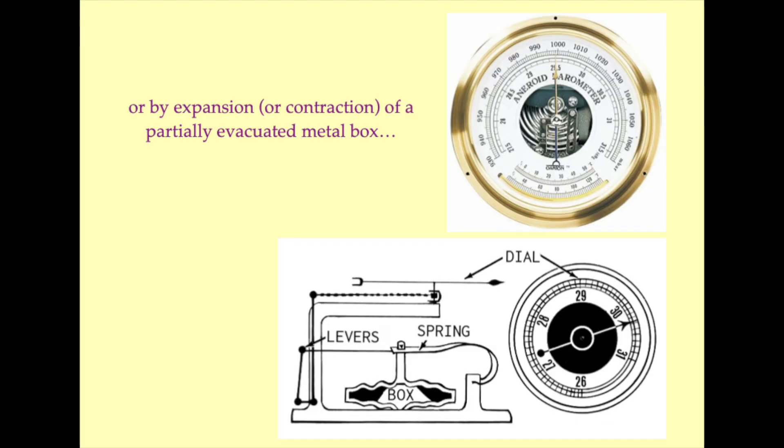Aneroid barometers are built around an evacuated metal canister. This canister will expand if the pressure applied to it is reduced and will contract if the pressure applied to its exterior is increased. These expansions and contractions are directly related to the position of a dial by a spring and a gear.